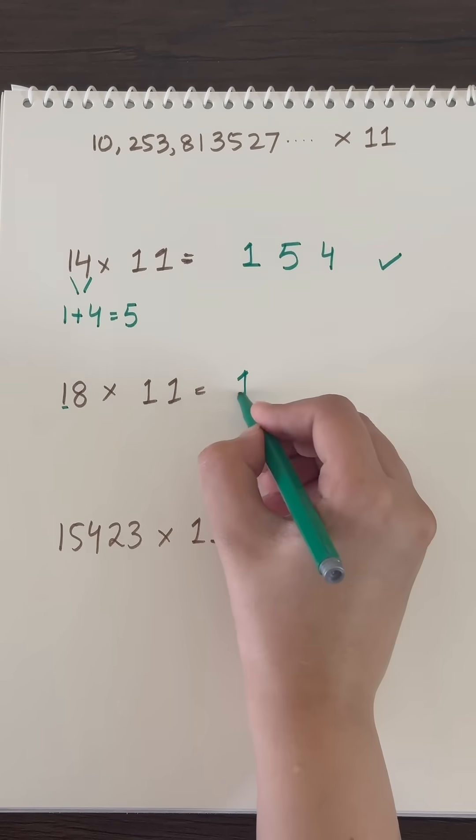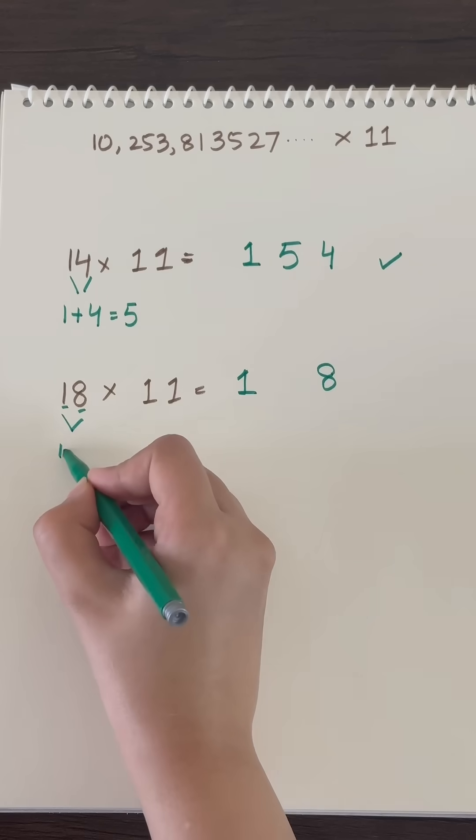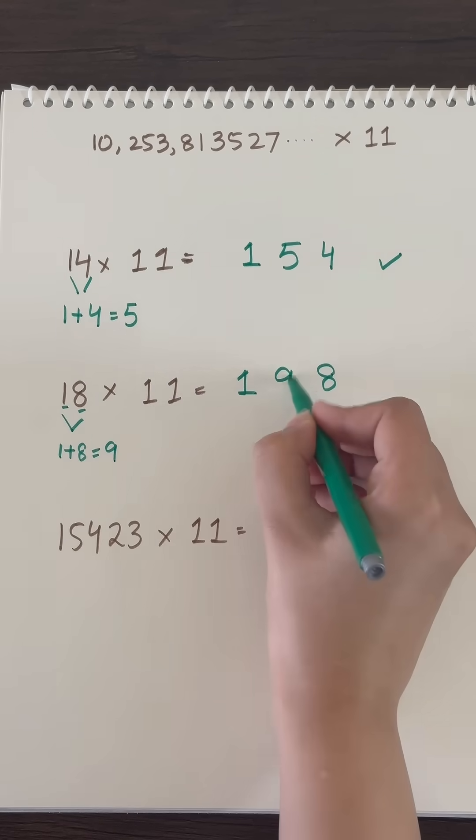To multiply 18 by 11, take the 1, take the 8, and simply add 1 plus 8 to get the answer, which becomes 198.